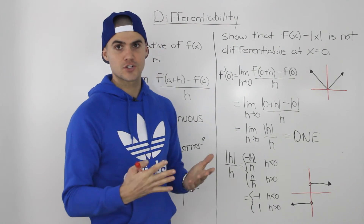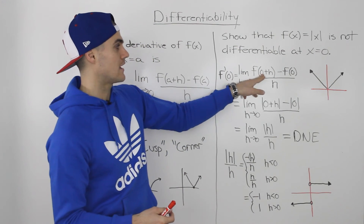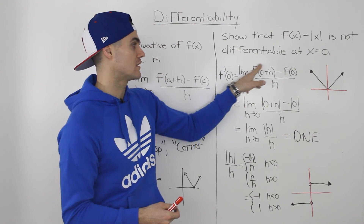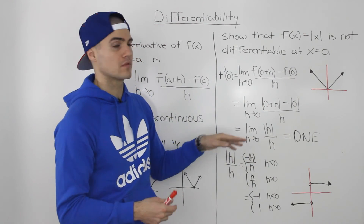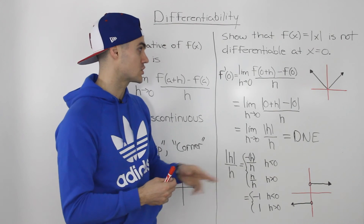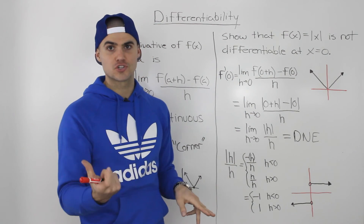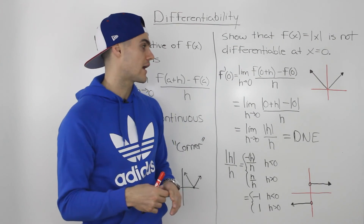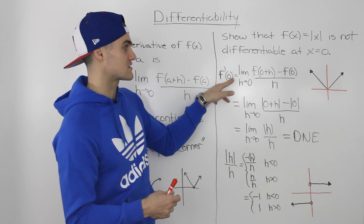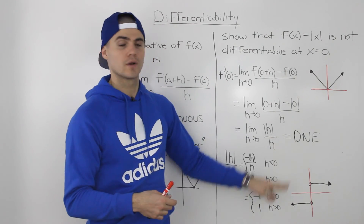To summarize: whenever you're showing that a function is not differentiable at a specific x value, plug that x value directly into the derivative definition and solve the limit from there. Don't find the general derivative function by plugging in x first and then substituting 0 — that's not how you prove it. You prove it by plugging in the specific x value right away and showing that the limit doesn't exist.